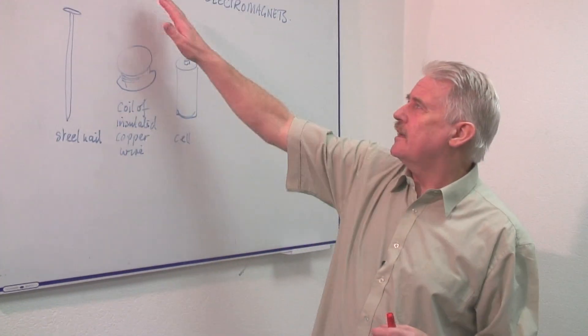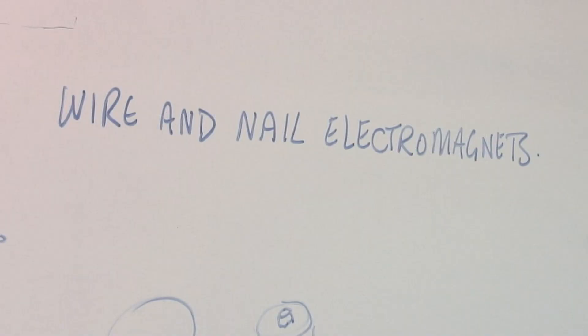Hi, I'm Steve Jones, and I'm going to explain how to make an electromagnet from a piece of wire and a nail.